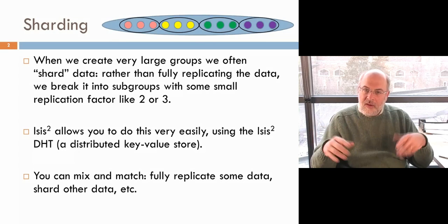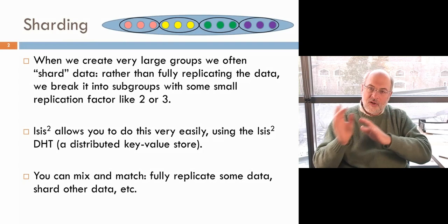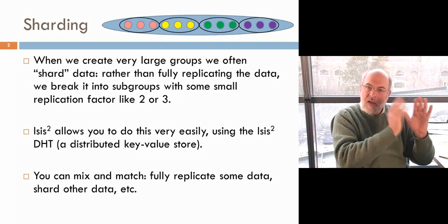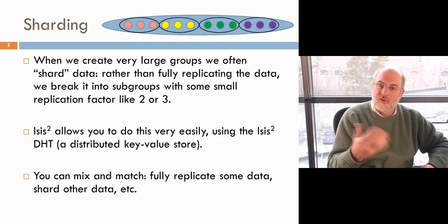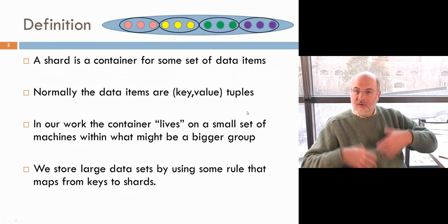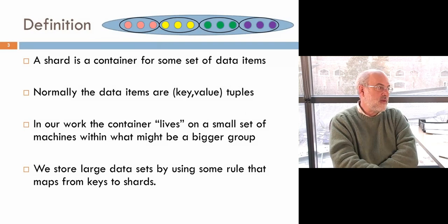A sharded group has a target size and a target number of shards, and from the combination we express a target on how many members each shard should have. As ISIS divides up the group, it distributes extra members into some shards, so you end up with shards that are a bit too big. You can mix and match — fully replicate some data and shard other data — giving you quite a lot of power to think about what you can do with these features.